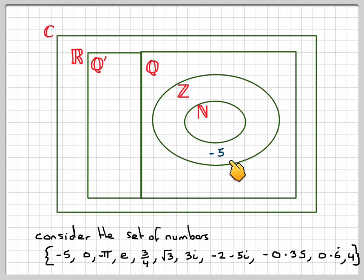Right, minus 5 is an integer. 0 is in the set of positive integers and 0. Minus pi, that's irrational. E is also irrational. 3 over 4 is a fraction, so it goes in there. The square root of 3 is irrational. 3i is complex. Minus 2 minus 5i is also complex.